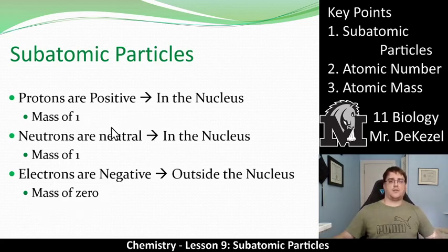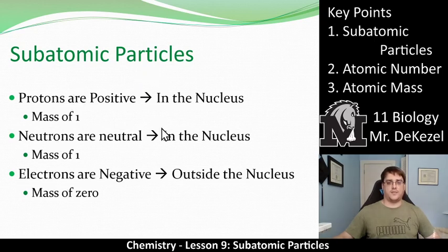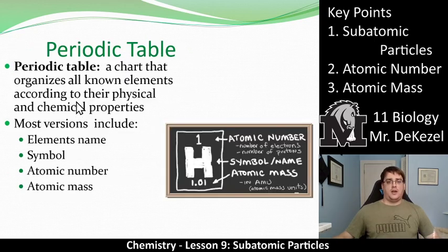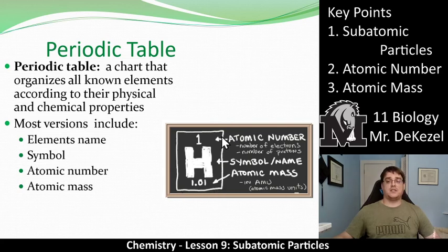They do not have a mass — they don't weigh anything. That's a review of the three subatomic particles: protons, neutrons, and electrons. We can actually get all that information from one square — one element symbol — on the periodic table.